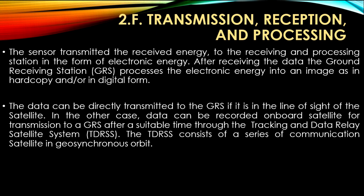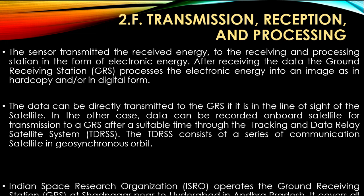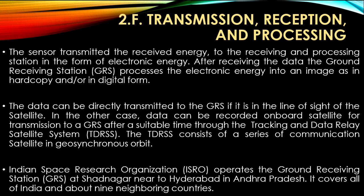The TDRSS consists of a series of communication satellites in geosynchronous orbit. We will learn about different orbits in the next video. The Indian Space Research Organization (ISRO) operates the ground receiving station (GRS) at Shadnagar, near Hyderabad in Andhra Pradesh. It covers all of India and about nine neighboring countries.